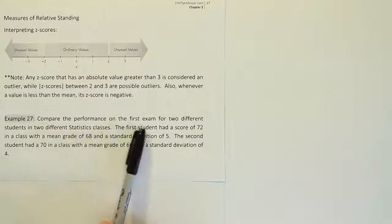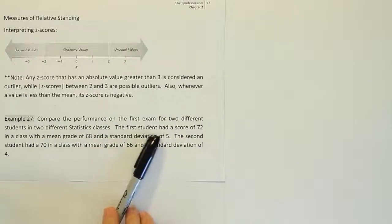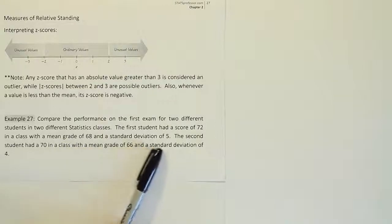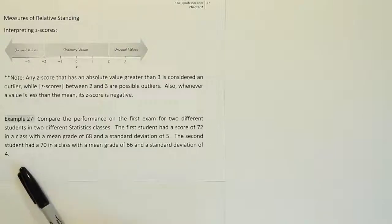Example 27. Compare the performance on the first exam for two different students in two different statistics classes. The first student had a score of 72 in a class with a mean grade of 68 and a standard deviation of 5. The second student had a 70 in a class with a mean grade of 66 and a standard deviation of 4.